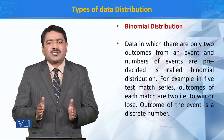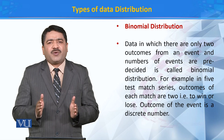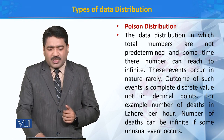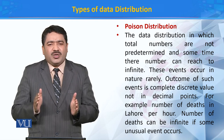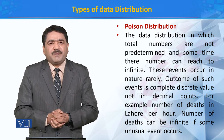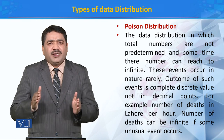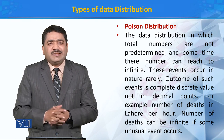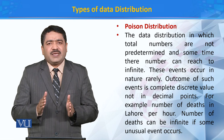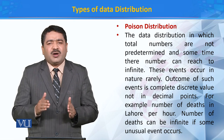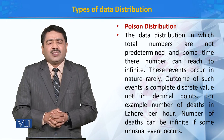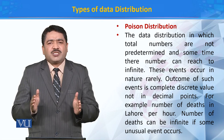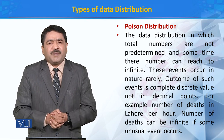تیسری type of data distribution کو ہم Poisson distribution کہتے ہیں. Poisson distribution کے اندر جو number of events ہیں یہ پہلے سے predetermined نہیں ہوتے اور یہ events sometime extreme تک پہنچ جاتے ہیں یعنی انکی تعداد بہت زیادہ ہو سکتی ہے. نارمل حالات کے اندر جو Poisson distribution ہے اسکے اندر جو number of events ہوتے ہیں وہ بہت کم ہوتے ہیں.